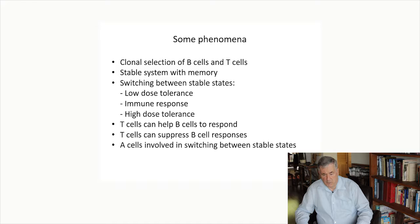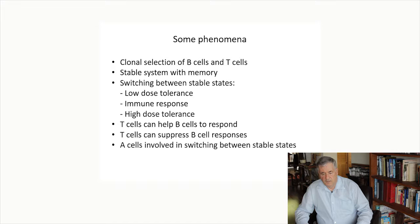It's important that T cells can help B cells to respond by making antibodies. T cells can also suppress the production of antibodies by B cells and the A cells are involved in this switching between stable states.